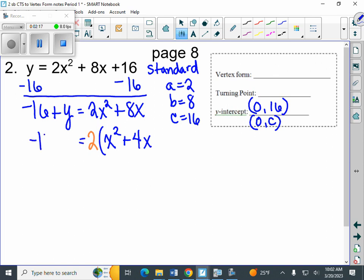So we've got negative 16 plus y over here on the left. We factored out the 2. And now, let's put the box in.